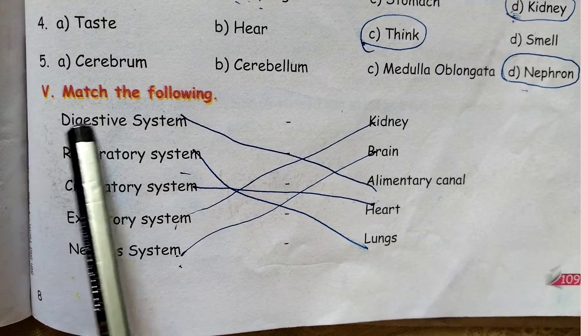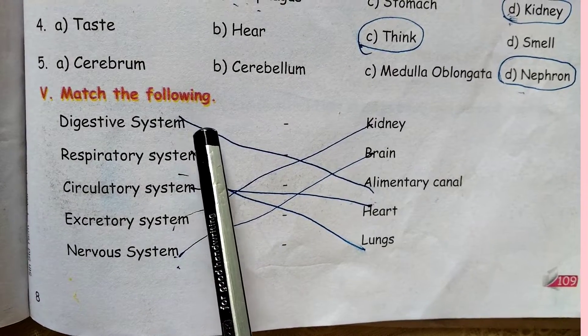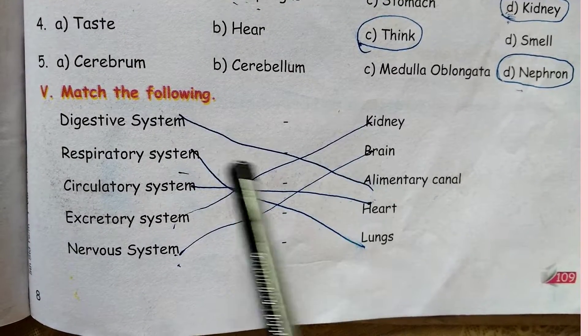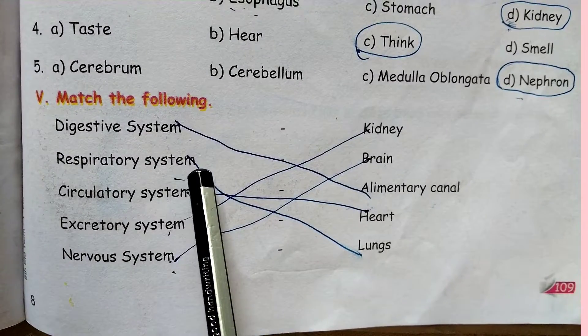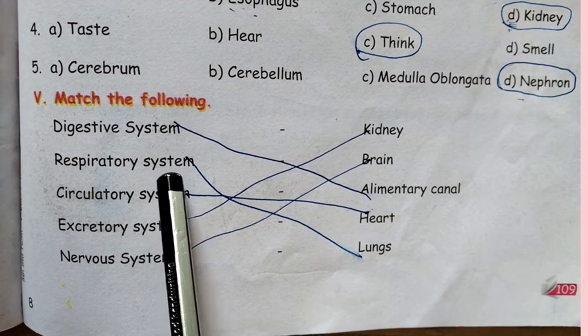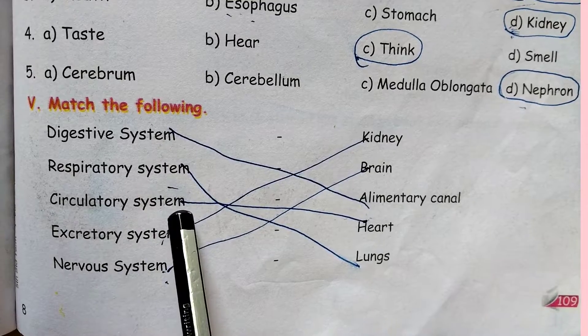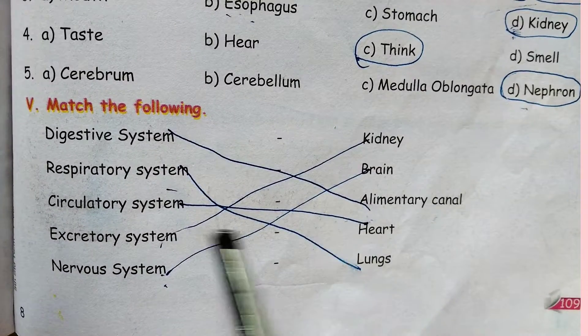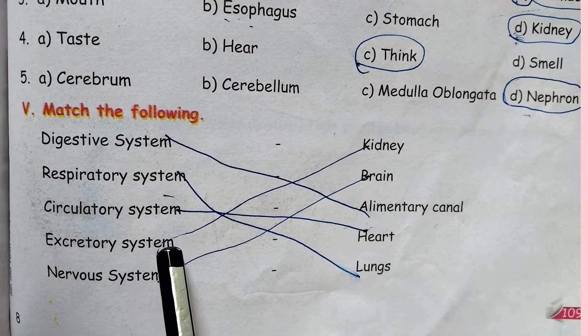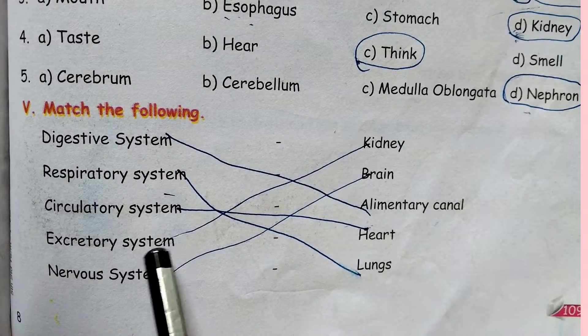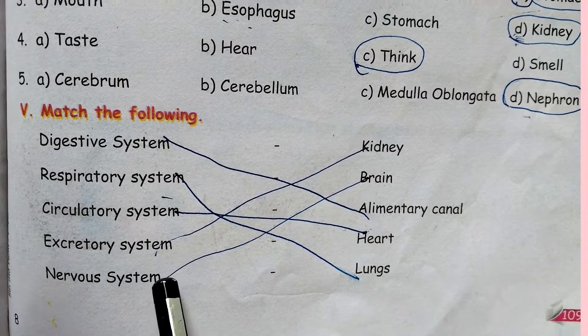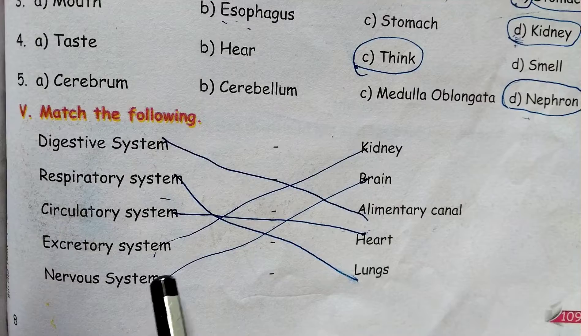Match the following: Digestive system — alimentary canal. Respiratory system — lungs. Circulatory system — heart. Excretory system — kidney. Nerve system — brain.